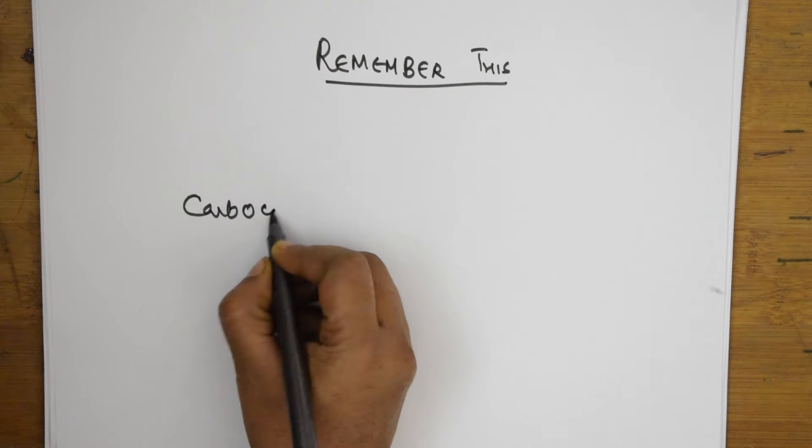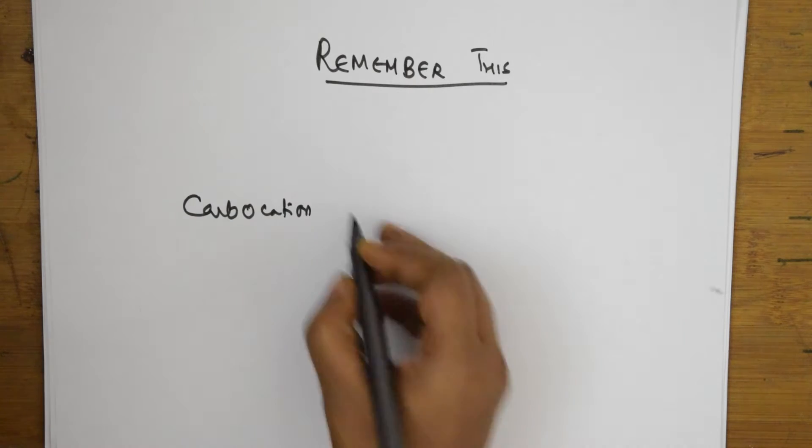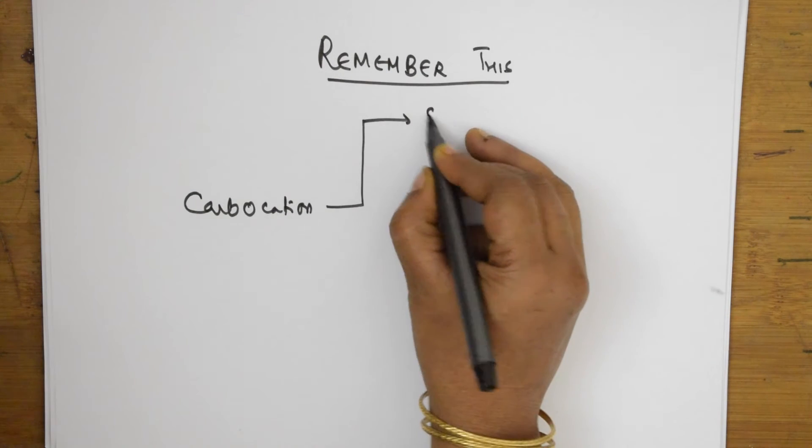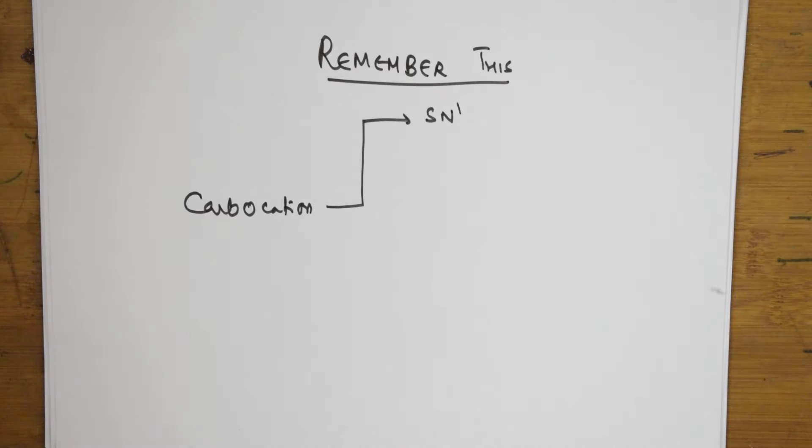Carbocations are formed in SN1 reaction mechanism, that is unimolecular nucleophilic substitution reactions.